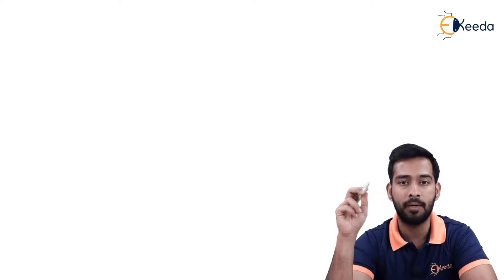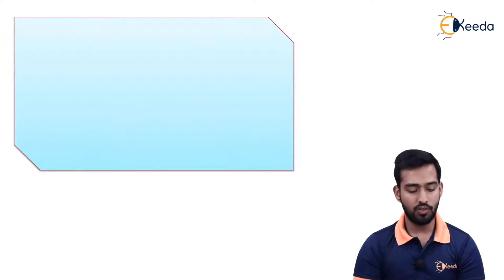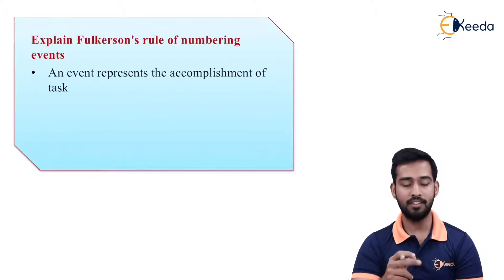As we have divided the work into activities, each activity will be linked by the events. This event has to give the proper numbering to get to the desired end of your project and to find out the project duration and critical path. For giving the numbering to the events, we have to follow the Fulkerson rule which is explained below.